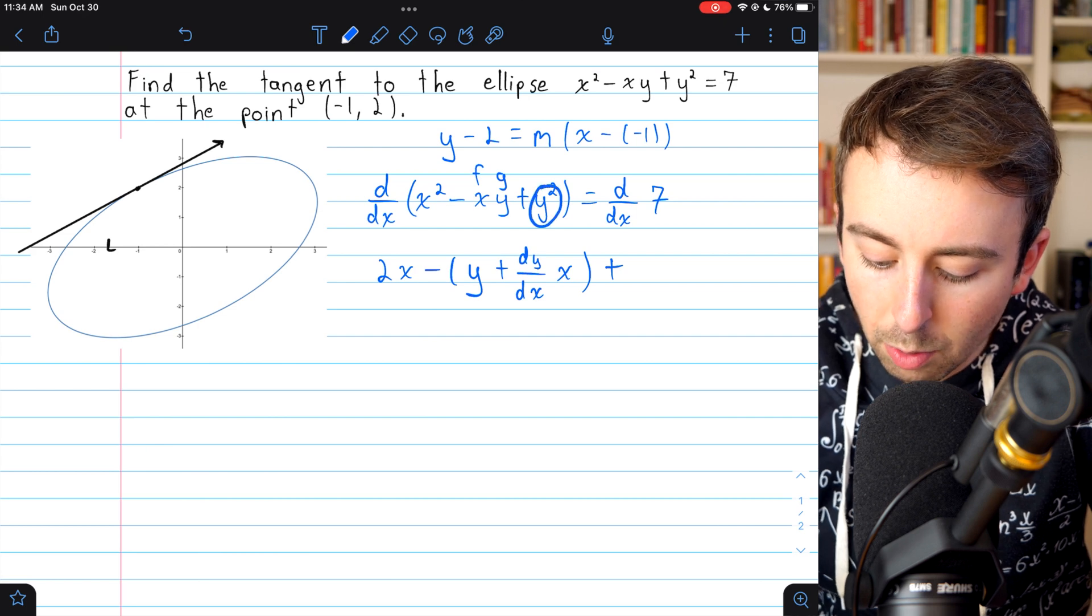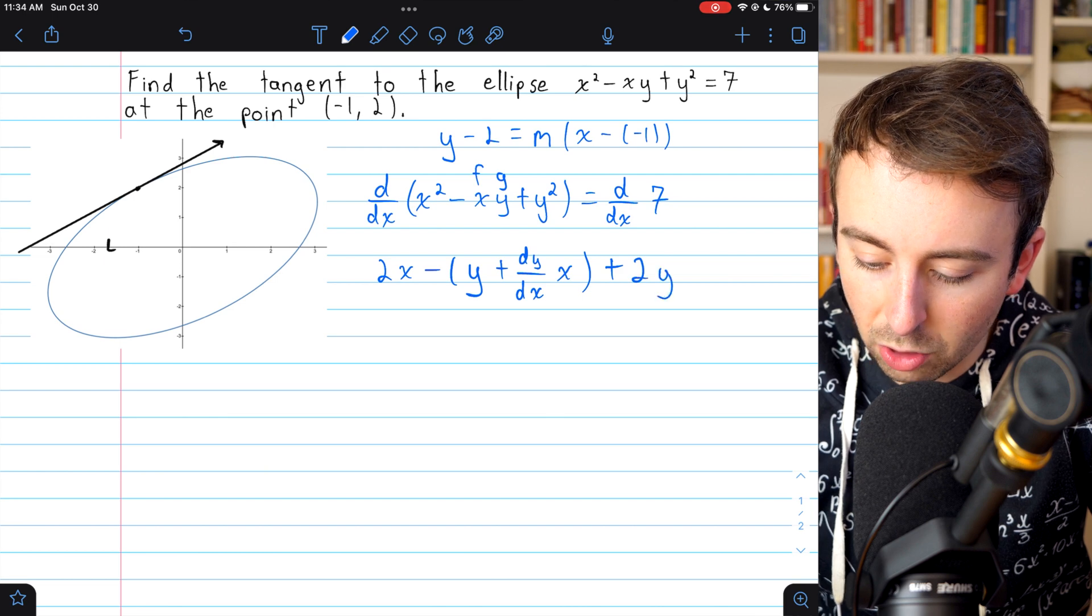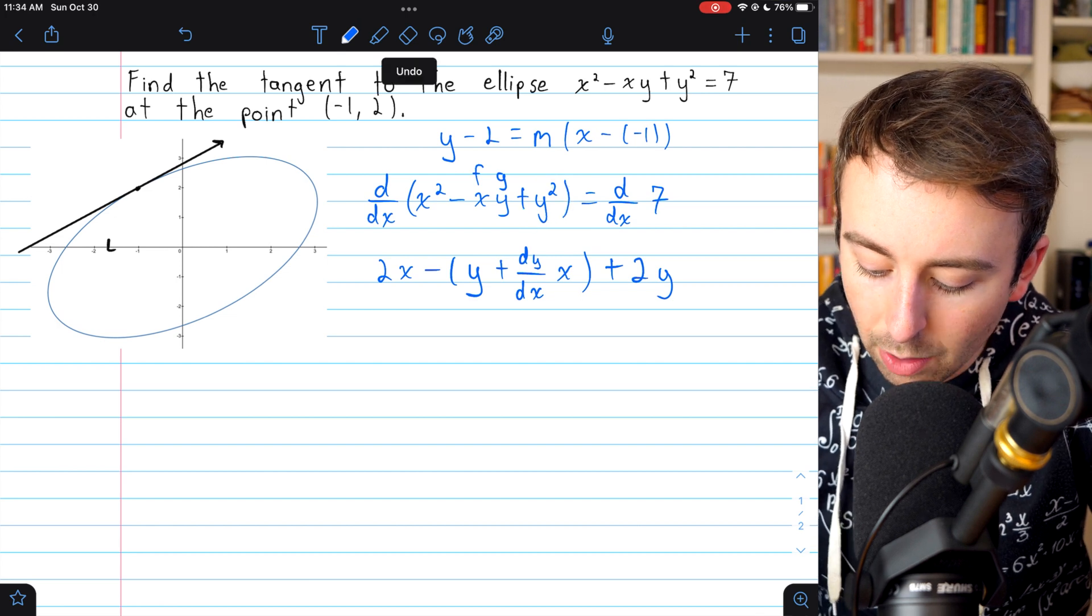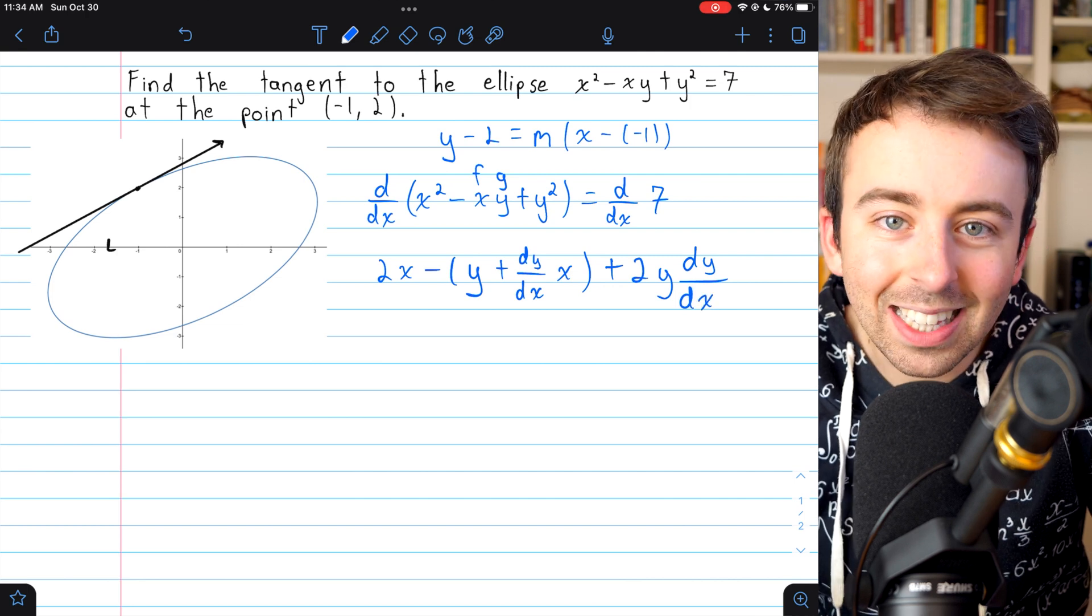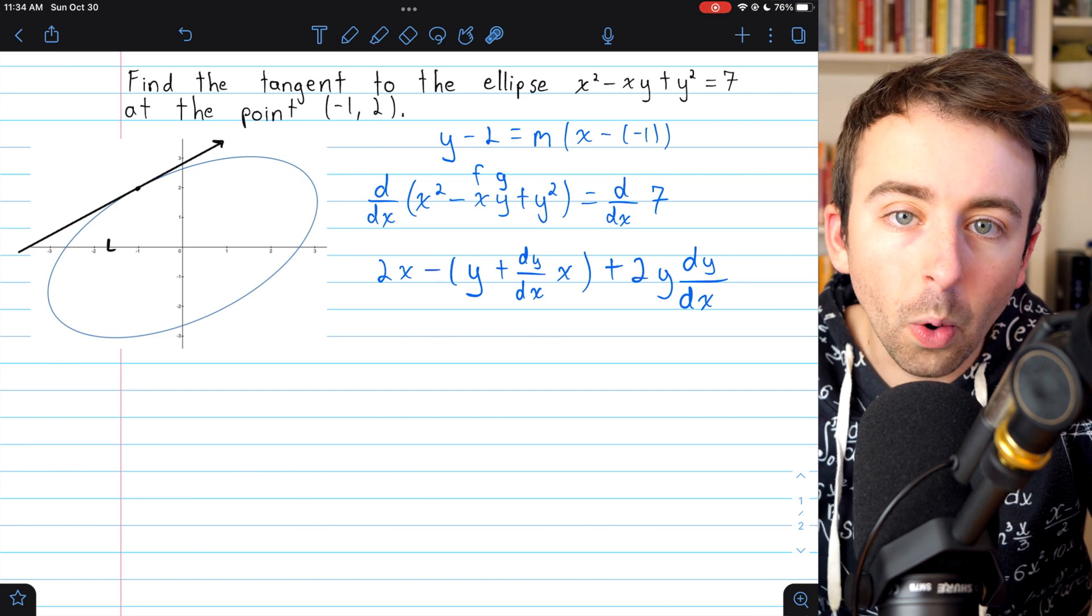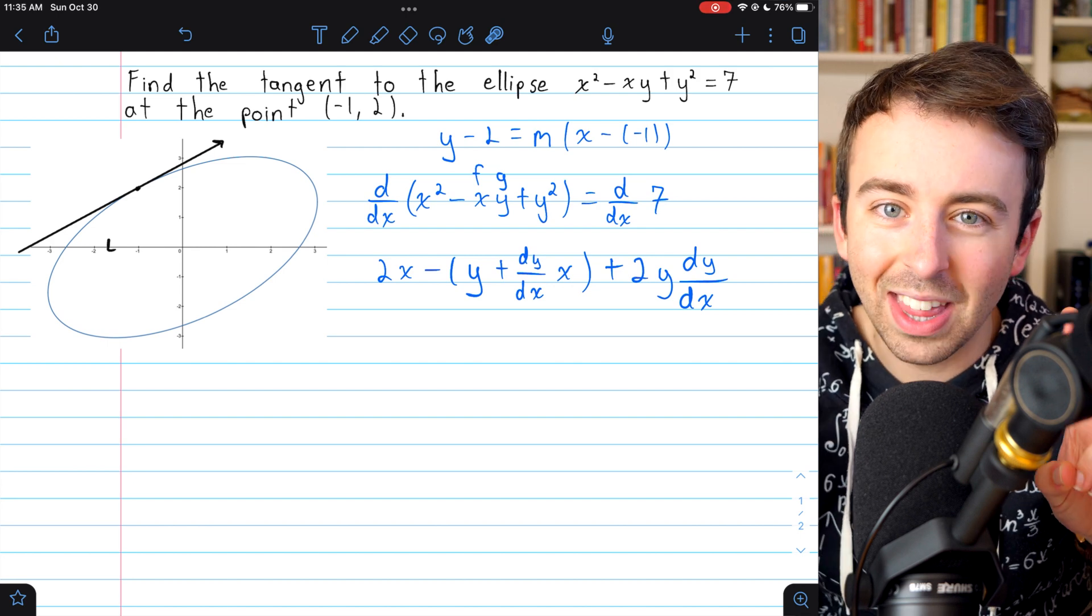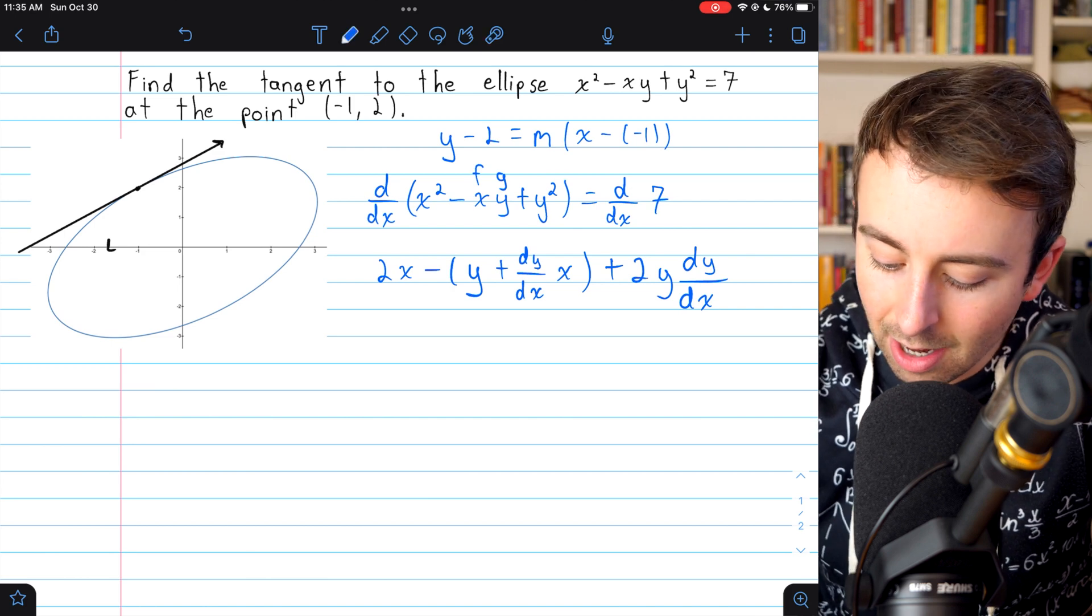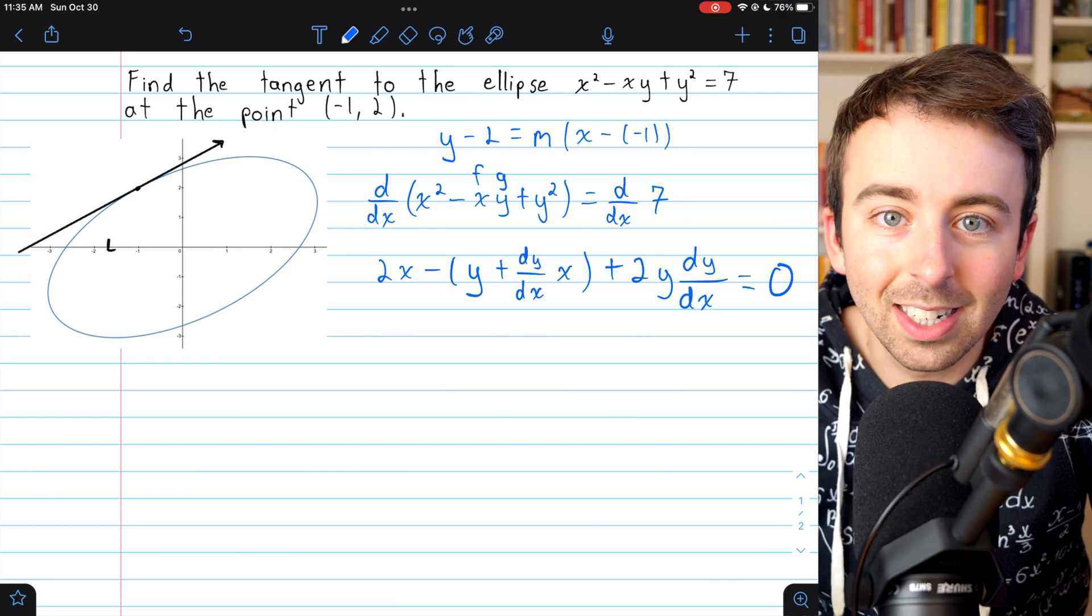We can move on then to the derivative of y². The first step of this is just power rule, so it's 2 times y. But then, because this is a y function, we need to hit it with the dy/dx factor. Because we've got this sort of implicit chain rule going on. Yes, we have y², but also y is an implicit function of x. So we then need to multiply by the derivative of that inside y function, giving us dy/dx. On the right, the derivative of 7 is just 0. The derivative of a constant is always 0.